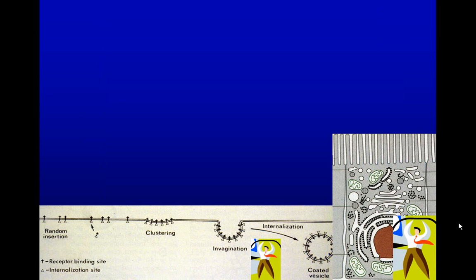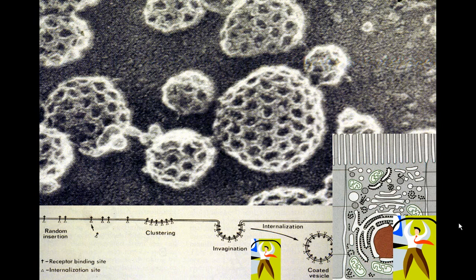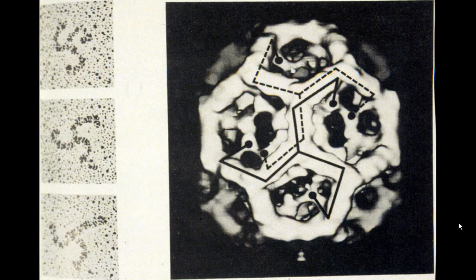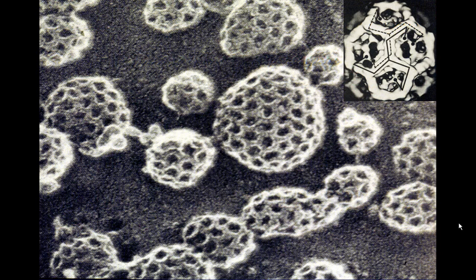If you're a little person inside the cell looking up at the top, this is what you'd see — coated pits that will become coated vesicles when they pinch off. This is brought about by clathrin, which is a three-unit protein that forms the structure facilitating pinching off from a flat plasma membrane. This is how it looks looking outward from inside the cell toward the membrane, seeing the invagination from the surface.